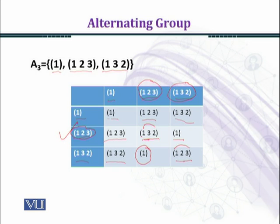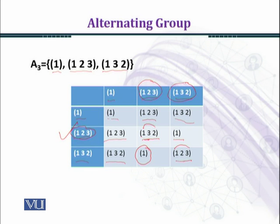In a similar manner you can find the alternating group of the symmetric group S4. The order of S4 is 4 factorial, which is 4 × 3 × 2 = 24, so the order of the alternating group A4 is 12. You can try this example at home, construct the Cayley table in the same manner, and verify that the alternating group A4 with 12 elements forms a group.